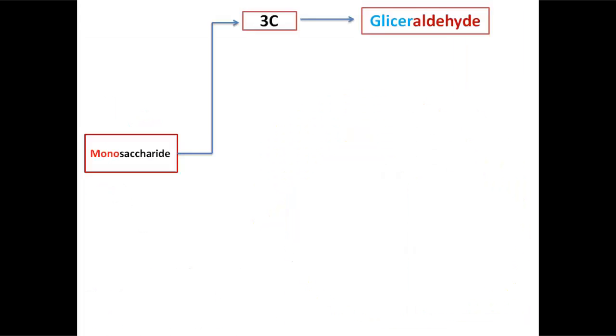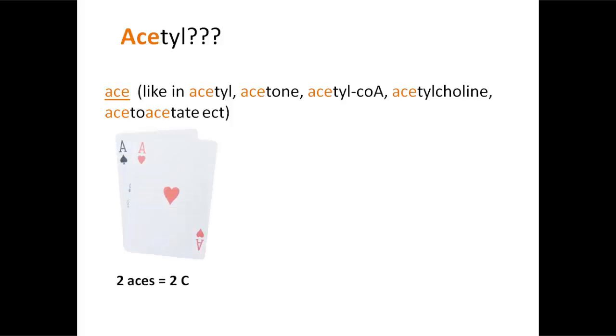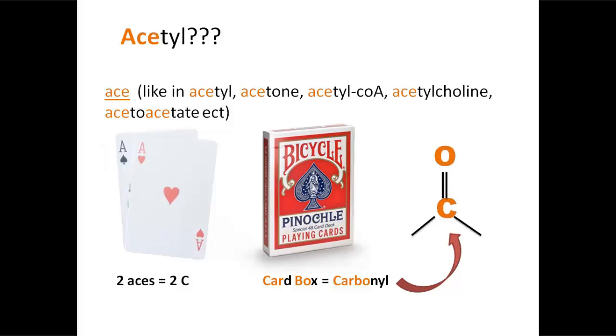Secondly we have dihydroxyacetone, which is an acetone with two hydroxyl groups. But what is an acetone? Before I discover it, I would like to imprint something very important in your mind - something you're going to see too often in biochemistry. What is an acetyl group? Just remember something from this day on: every time you see this three letter combination 'ace' - like in acetyl, acetone, acetyl coenzyme A, acetylcholine, acetoacetate - think of the two aces with hard suit: the ace of hearts and the ace of spades. The two aces represent two carbon atoms. Now think you are putting these two aces in a card box - the card box represents the carbonyl group, which is a carbon double bonded to an oxygen atom.